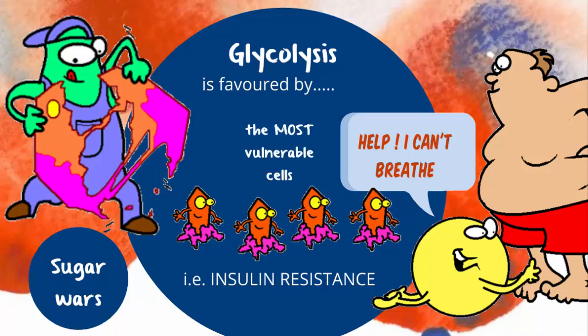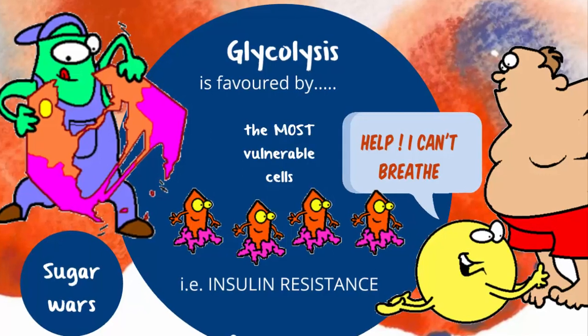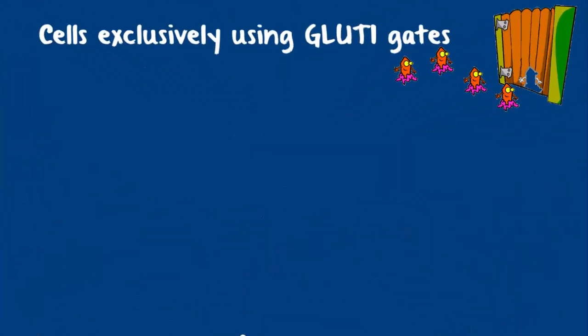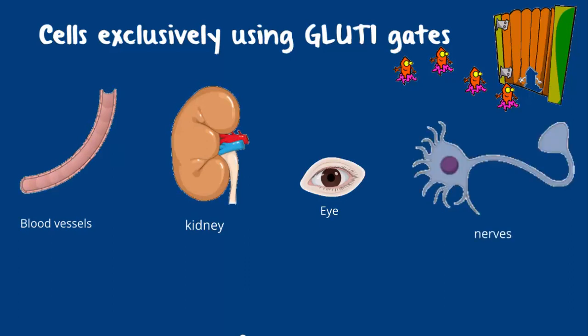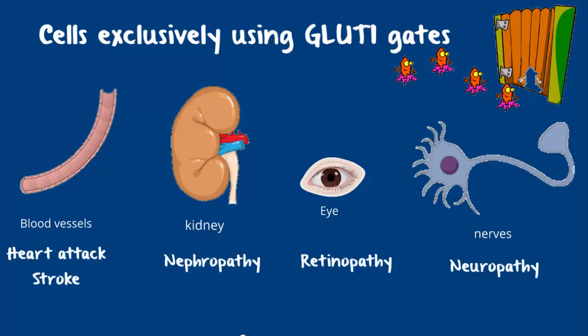A couple of cell types are especially vulnerable because they can't shut the door on glucose. These include the cells lining the blood vessels, as well as the cells in the kidney, eye, and nerves — the organs that more often than not break under the strain of metabolic troubles.